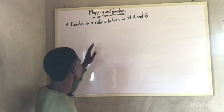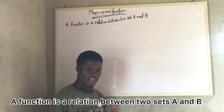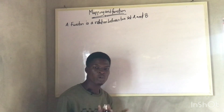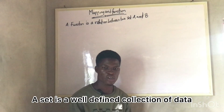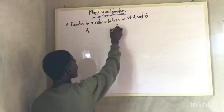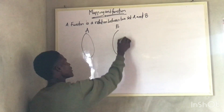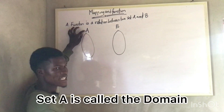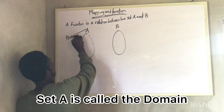So, what is a function? A function is a relation between two sets A and B. And what is a set? A set is a well-defined collection of data. So that means I have a set called A and I have another set B. Now, in this set A, set A is what we call the domain. This A is called the domain.